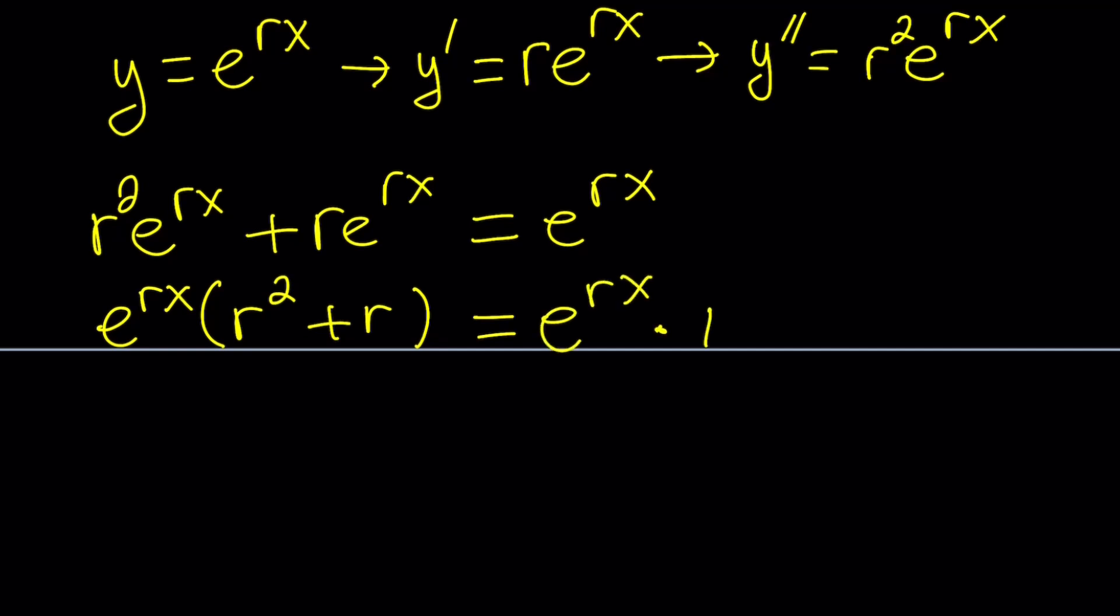And that gives me r squared plus r. And on the right hand side, I just have e to the rx. But I can also write it as e to the rx times one, because one times any number is the same number. Any exceptions? Not really.